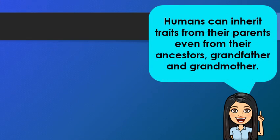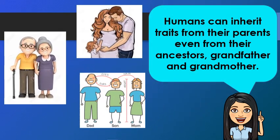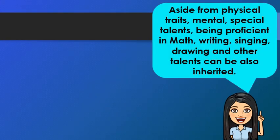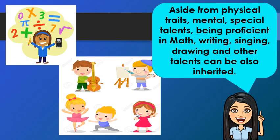How about humans? We can also inherit traits from our parents, even from our ancestors, grandfathers, and grandmothers. Look at your parents — what physical features did you inherit from them? Aside from physical traits, mental and special talents such as being proficient in math, writing, singing, and drawing can also be inherited from our parents or ancestors. What special talent did you inherit from your parents?